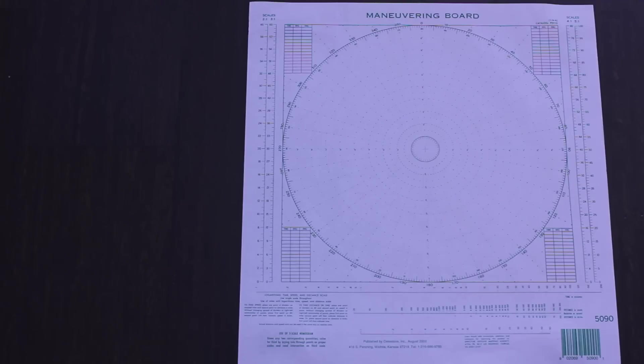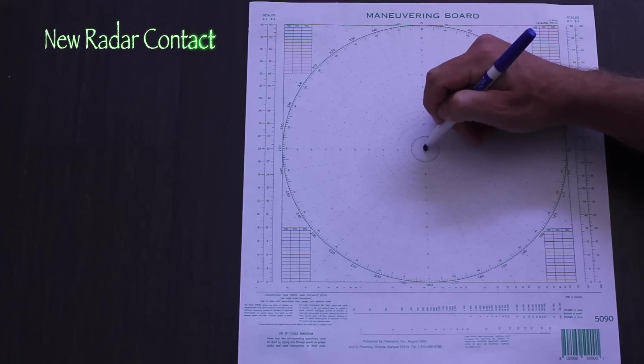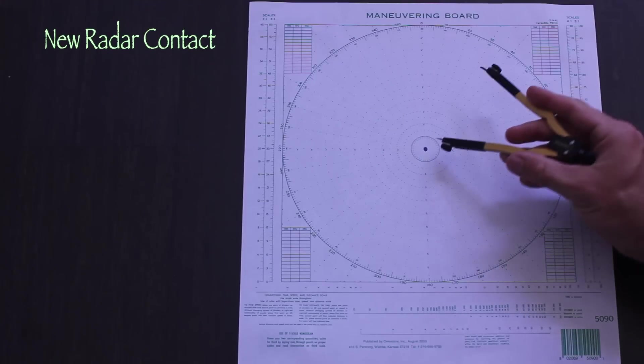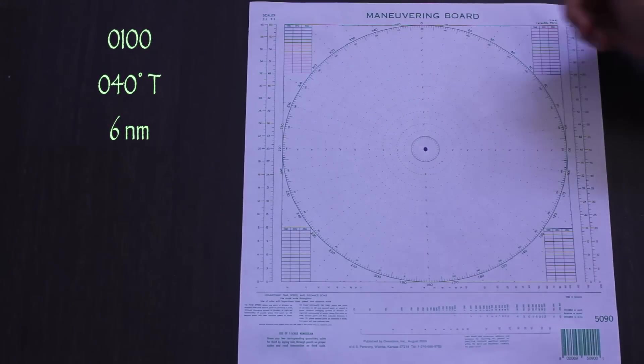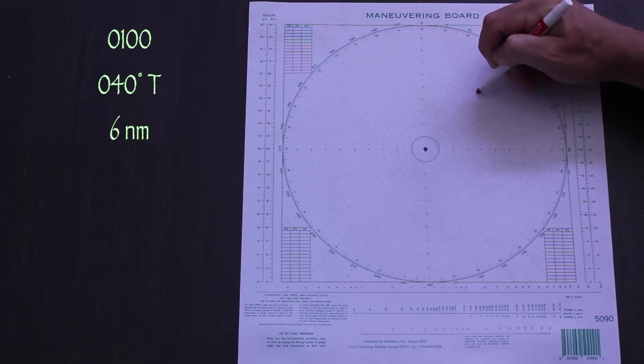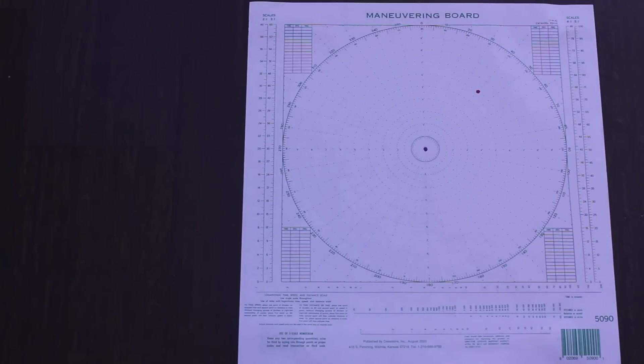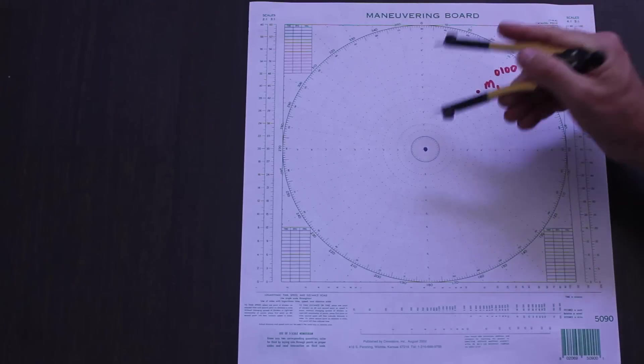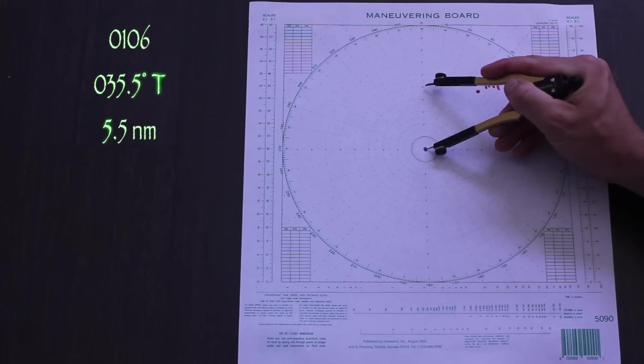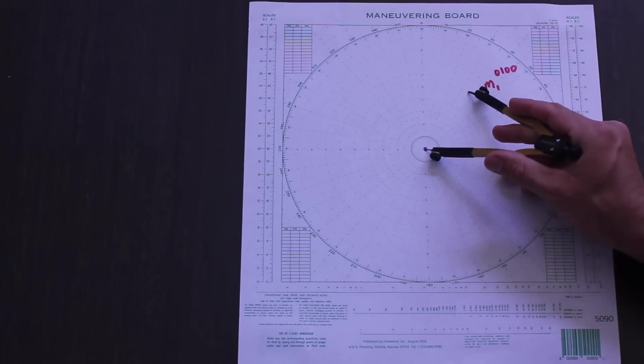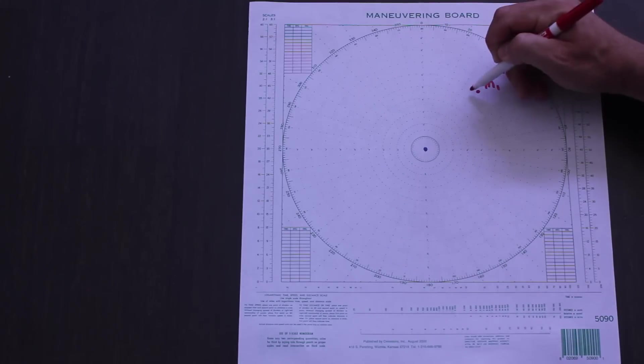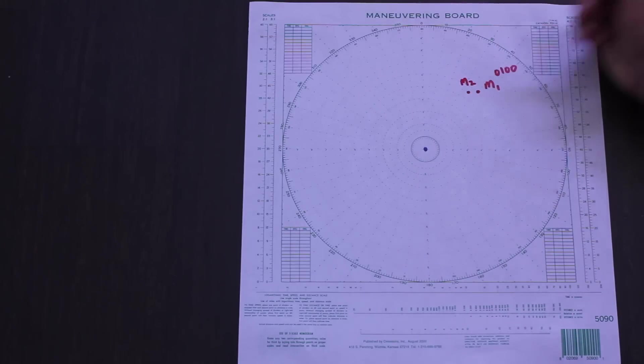So let's plot our first contact. The idea is to watch the radar and note the bearing and range to the contact, then transfer the data to the maneuvering board. Each point is annotated with a letter, typically m, or a time. In this case, we'll do both. Then, plot the same contact two or more times at a specific interval, usually either three minutes or six minutes. This is for easy application of the three or six minute rule, but for now, we'll just plot.